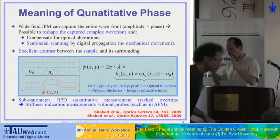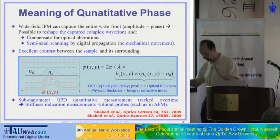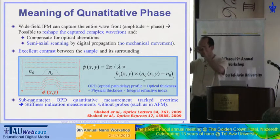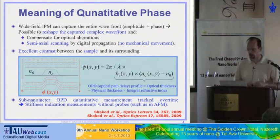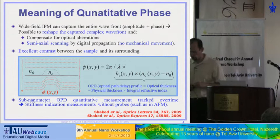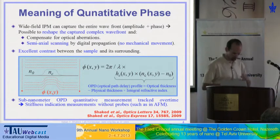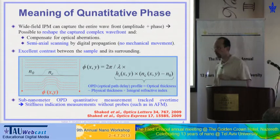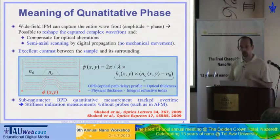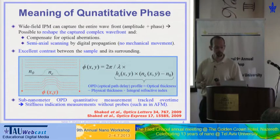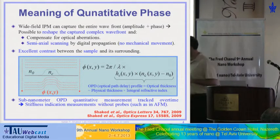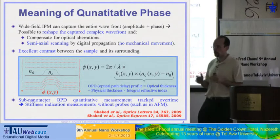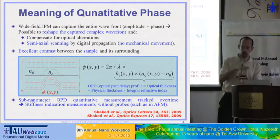I'm also talking about spatial stability, meaning that I have a phase image or optical thickness image obtained without scanning, and I measure the smallest difference between two points on the same image. The accuracy is sub-nanometric — if you build these interferometers correctly, we are able to get 0.2 nanometers in ambient conditions without any type of labeling. And if I'm able to track the optical thickness or physical thickness in time, I am actually able to get stiffness or elasticity indication, under the assumption that objects that fluctuate more are less stiff.